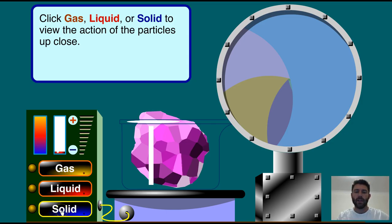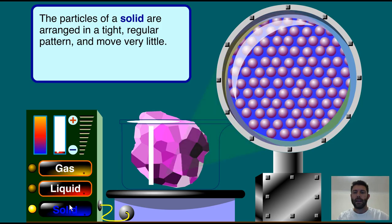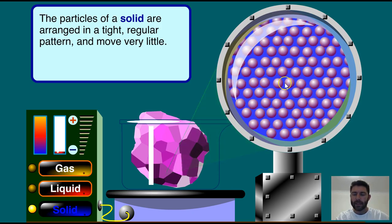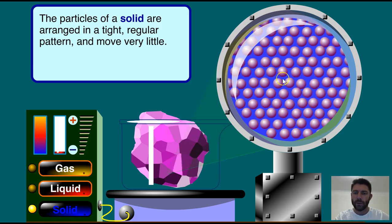Starting as a solid, you can see a solid in the beaker. When we click on the solid, you'll see the particles — they're arranged in a regular pattern and they're tightly packed. They're moving, but just really slowly, vibrating on the spot. That's how solids get their solid structure — arranged in a very tight pattern with really strong forces between those particles.